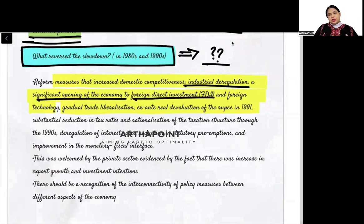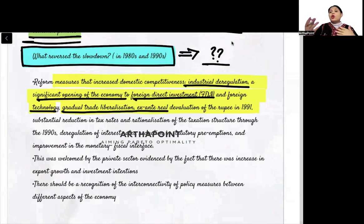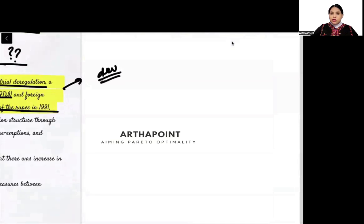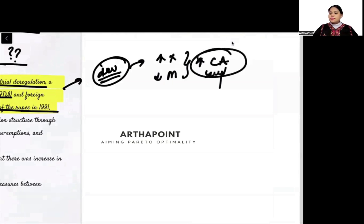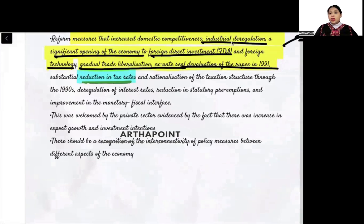Third, allowing foreign technology — this gave Indian firms a boost and also created competition, increasing their productivity. Fourth, gradual trade liberalization — trade was opened up, exports and imports of goods were increased to boost productivity. Fifth, rationalization of the taxation structure through the 1990s.